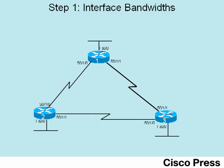Now let's move on to the specifics about how EIGRP calculates its metric. The interface bandwidth is one of two inputs into the EIGRP metric calculation, at least by default. The interface bandwidth setting is a software setting — it's configured with an interface subcommand, specifically the bandwidth command. This command does not impact the actual physical rate at which bits are sent out the interface. For example, in this network, the link between R1 and R2 is actually clocked at 64 kilobits per second, but we're going to default the bandwidth setting to the default serial bandwidth setting of 1544 on both ends of that link.